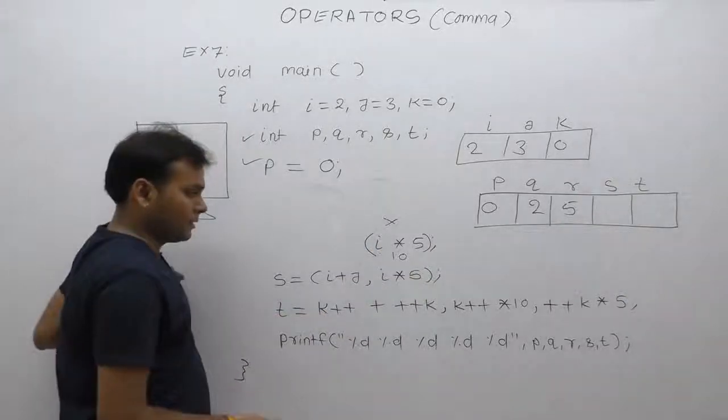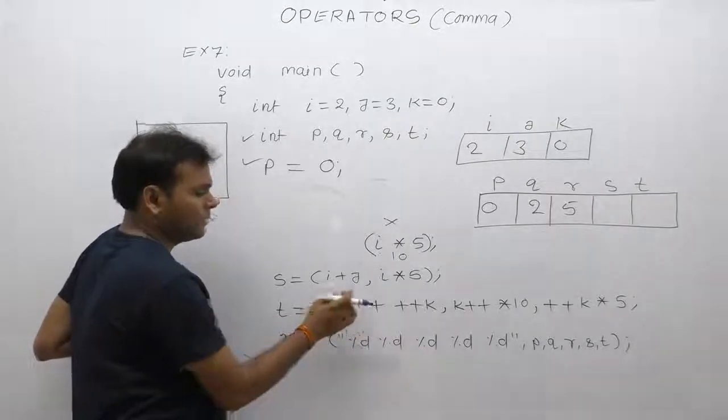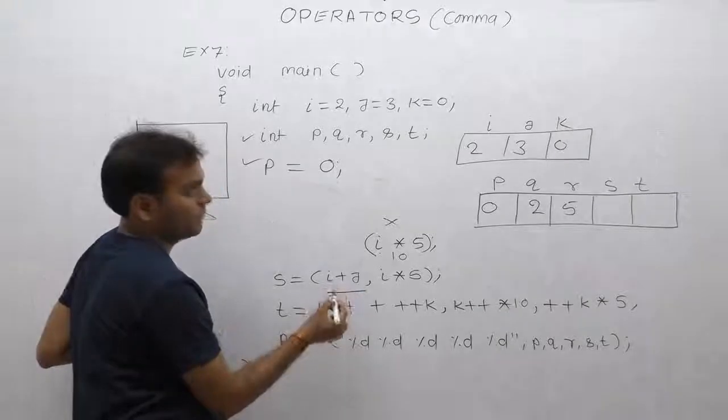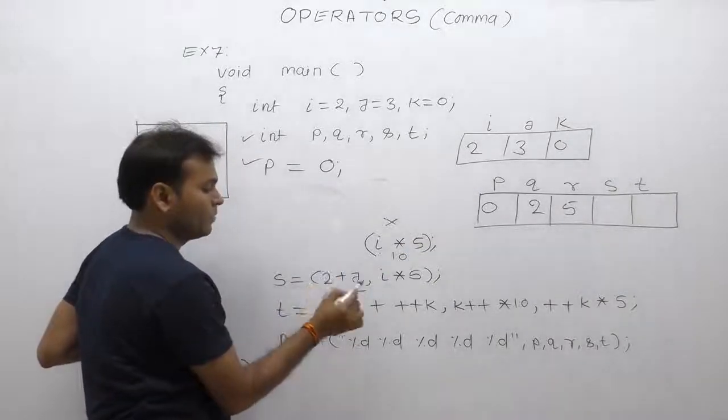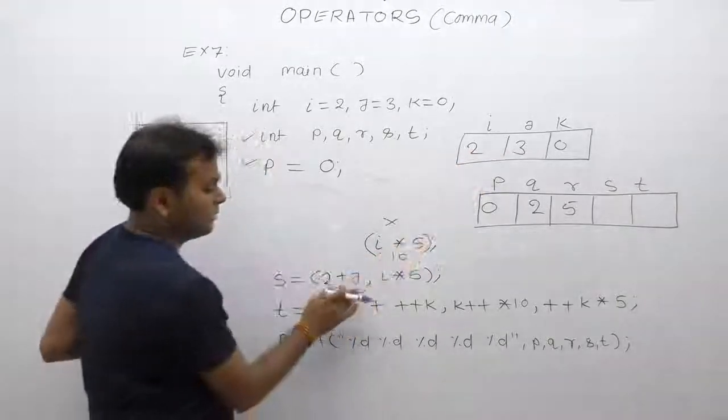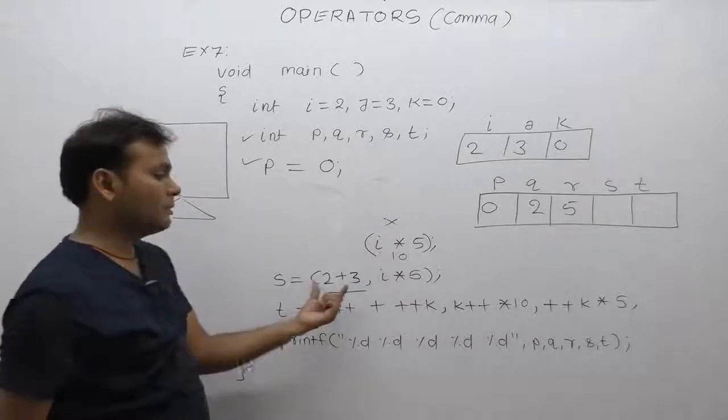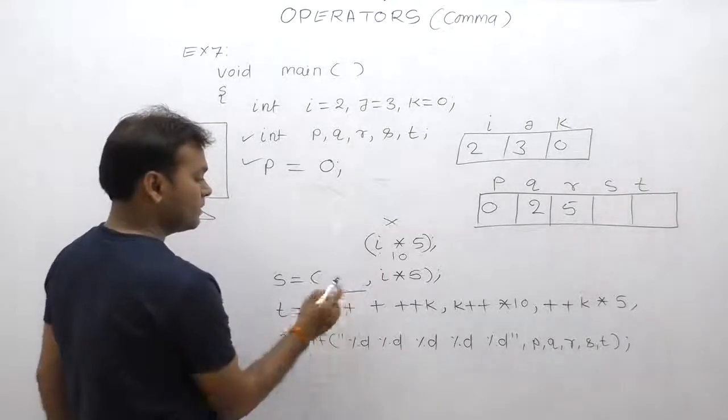Next one, in that case bracket has two expressions separated. Left expression i plus j. Value of i is 2, value of j is 3. 2 plus 3 becomes 5. Therefore the overall result is 5.